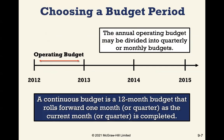A 12-month budget period is very common. A continuous budget rolls forward one month or quarter as the current period is completed, so you always have a rolling 12-month plan. Many organizations also just do it on an annual basis. You can also break up your annual operating budget into quarterly or monthly budgets, which can be very useful depending on your situation.